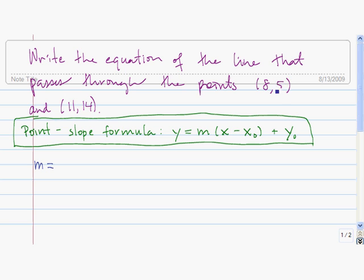So we take the y-coordinate of the first point, minus the y-coordinate of the second point, and divide it by the x-coordinate of the first point, minus the x-coordinate of the second point.